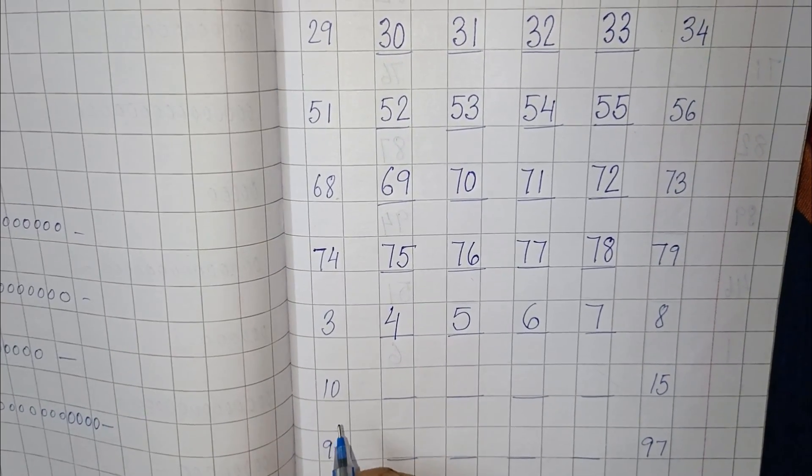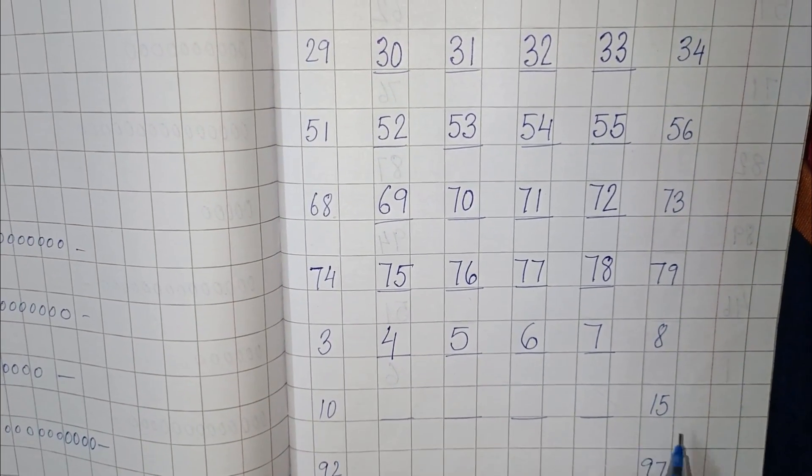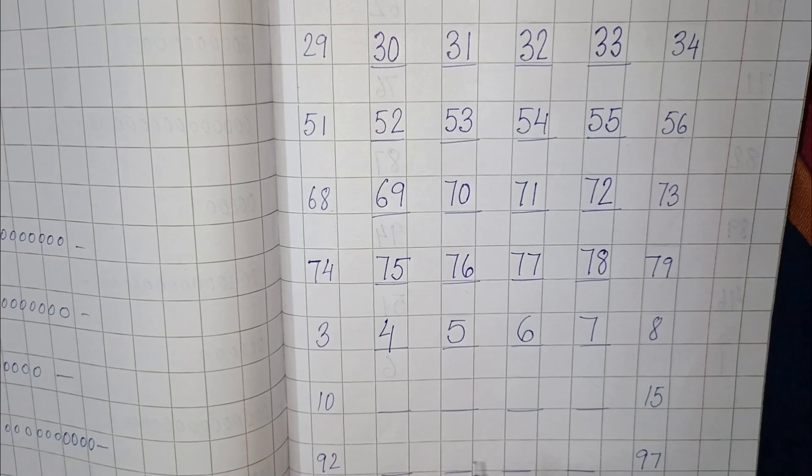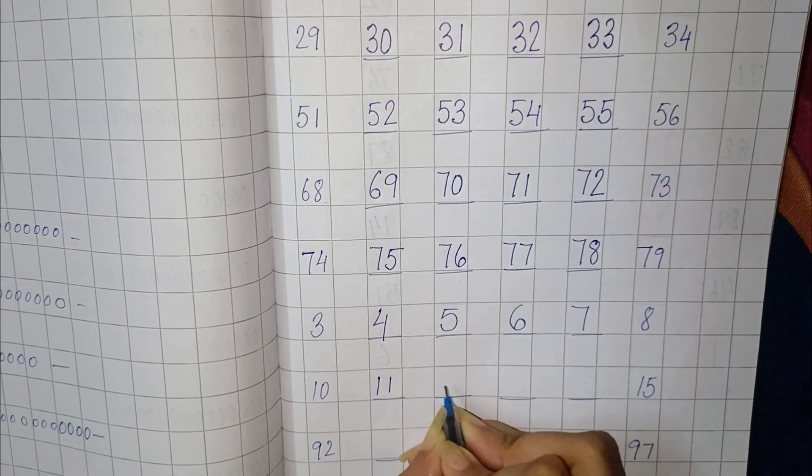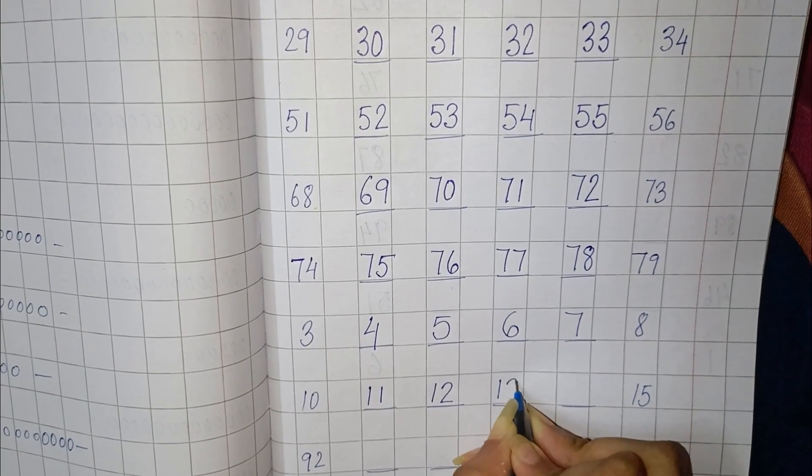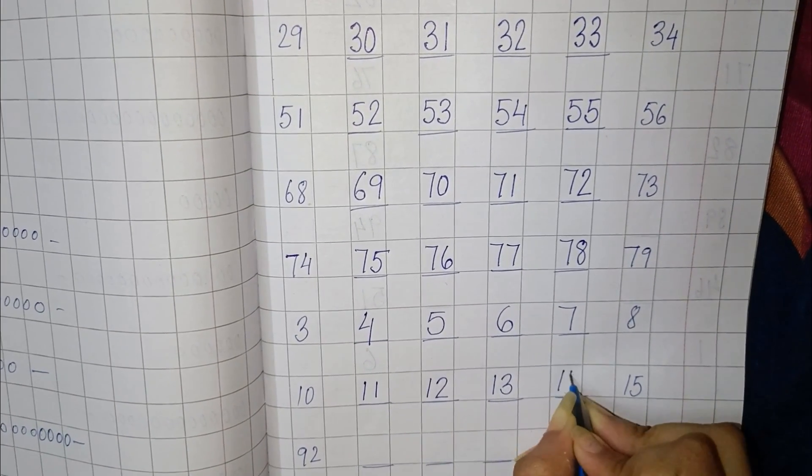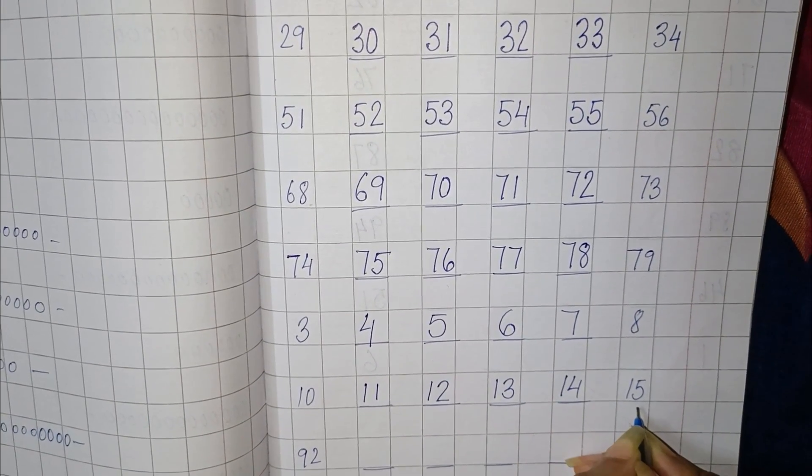Next you have to find numbers between 10 and 15. So 10, 11, 12, 13, 14, and 15.